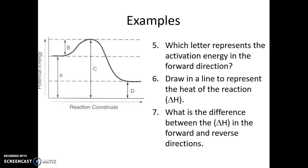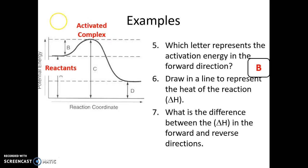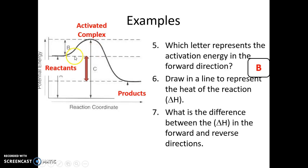Number five: which letter represents the activation energy in the forward direction? Forward is left to right. Activation energy is the difference between the reactants and the top of the hill — the activated complex — and the only letter going from reactants to the top is letter B. Number six: draw a line to represent the heat of reaction, delta H. That goes from reactants to products, and that distance — whether forward or reverse — represents delta H.